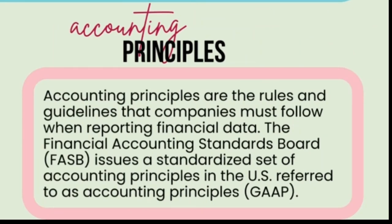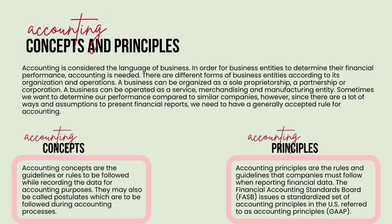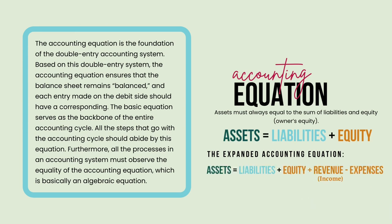Accounting principles are the rules and guidelines that companies must follow when reporting financial data. The Financial Accounting Standards Board, or FASB, issues a standardized set of accounting principles in the US. The accounting equation is the foundation of the double-entry accounting system. Based on this system, the accounting equation ensures that the balance sheet remains balanced, and each entry made on the debit side should have a corresponding entry. The equation serves as the backbone of the entire accounting cycle, and all processes must observe the equality of the accounting equation, which is basically an algebraic equation.